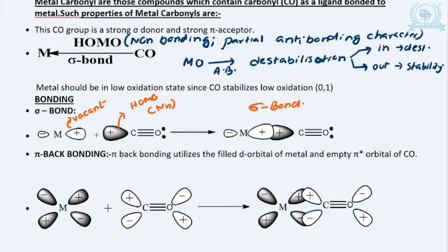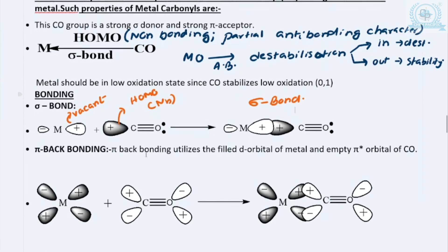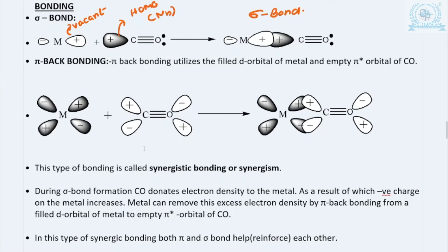After the sigma bond is formed, what happens is that more and more electron cloud density gets overloaded on the metal — the electron cloud density is now getting overloaded on the metal. This is a coordinate covalent bond.